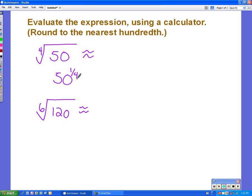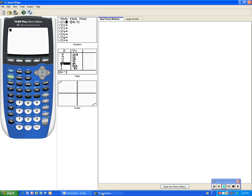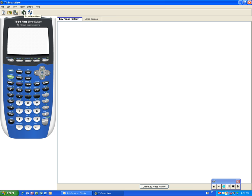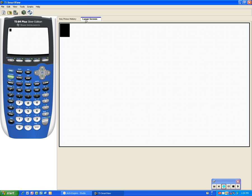Let's pull the calculator up. When we type this in, remember it's 50 to the one-fourth power. So type in 50. Since it's an exponent, remember we have to use the caret key. The caret key is right underneath the clear button.